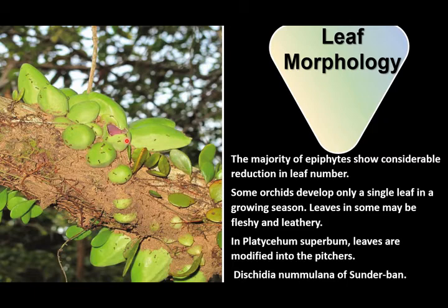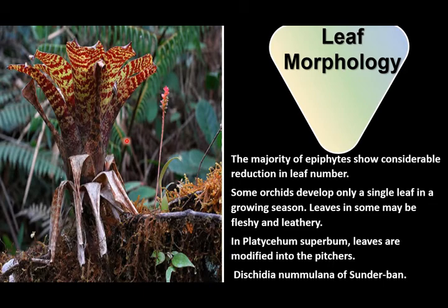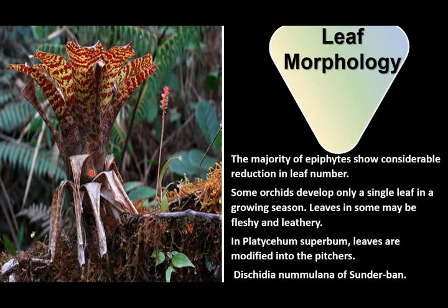In the family Bromeliaceae, some species develop spoon-like leaves arranged in a rosette, as you can see in the image. These leaves collect and store rainwater, which is finally absorbed by the epidermal hair present on the concave surface of the leaf.